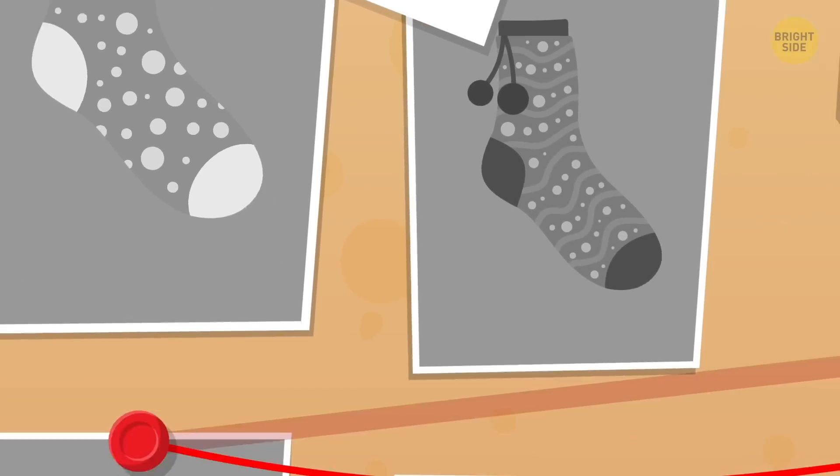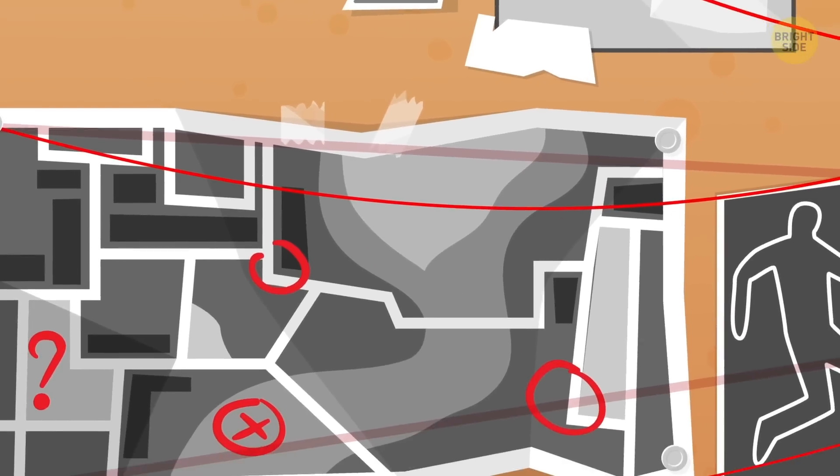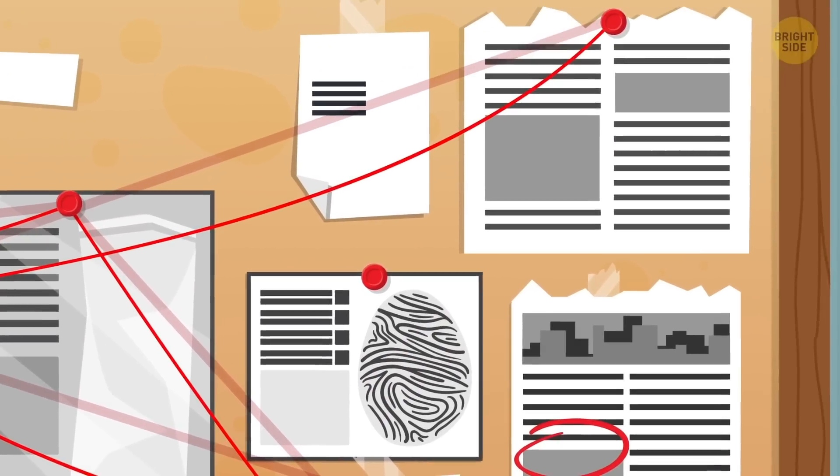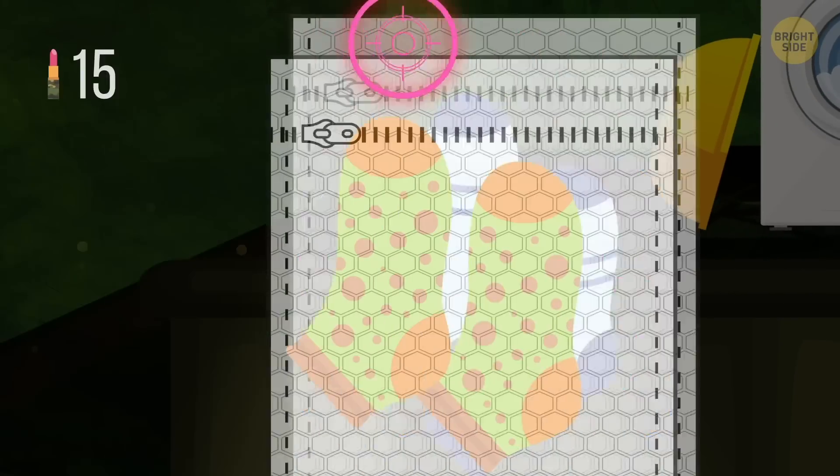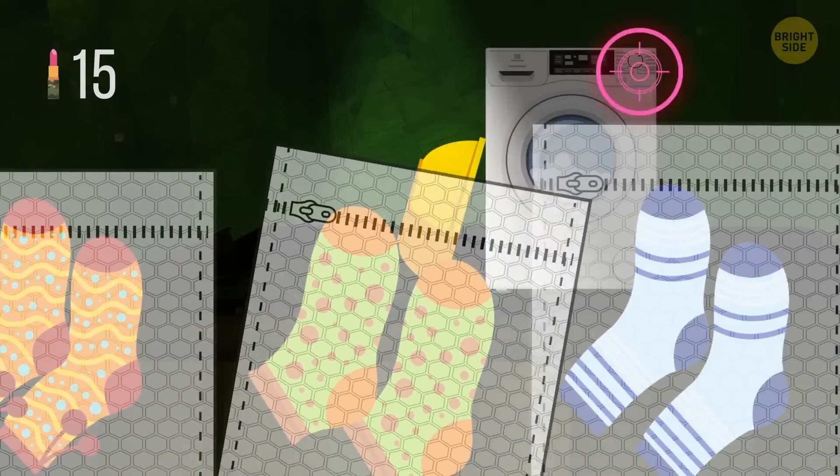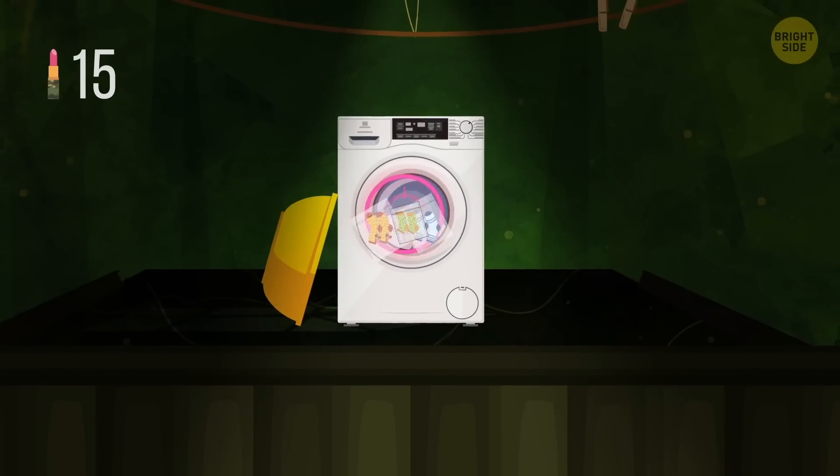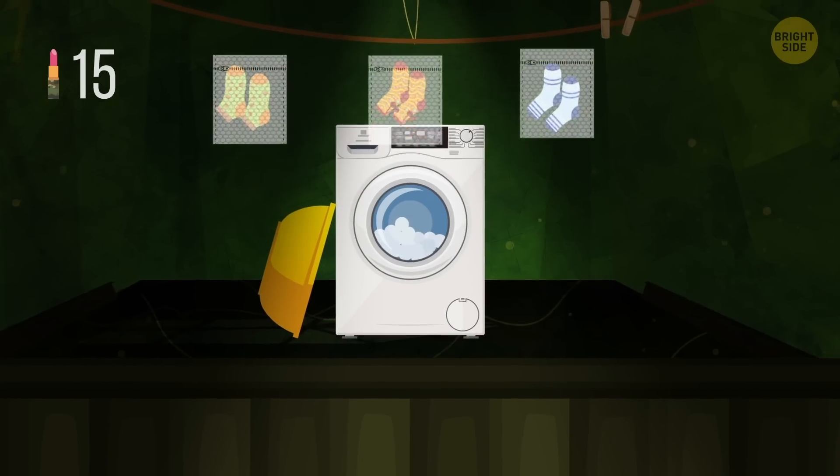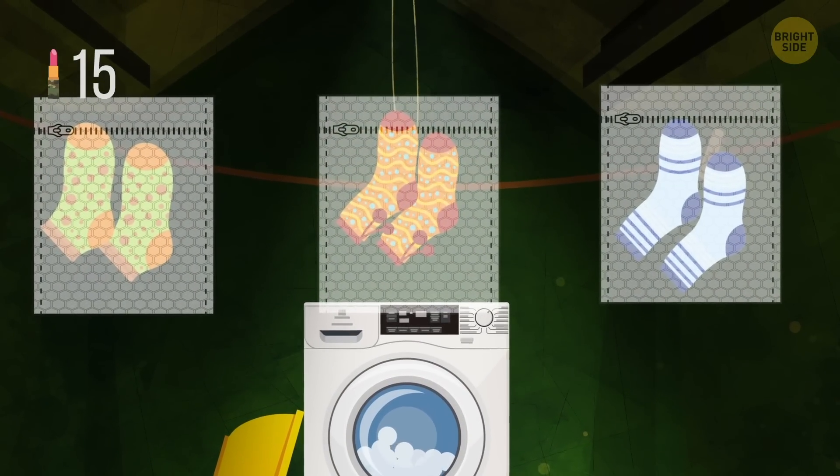Ever wonder where all those lost socks went? I don't know either, but I know a great way to prevent them from disappearing. Put the socks of each family member in their own lingerie bag. These bags will later go through the washing machine and the dryer without a single sock getting lost.